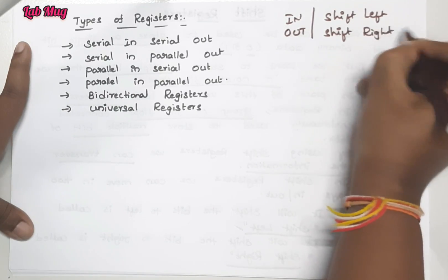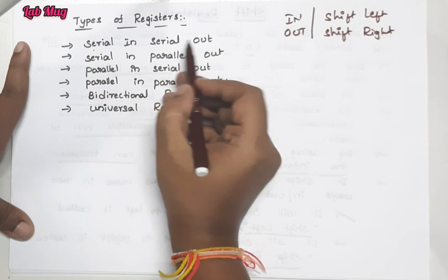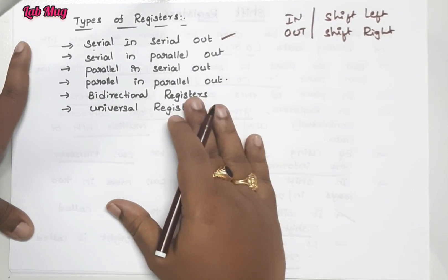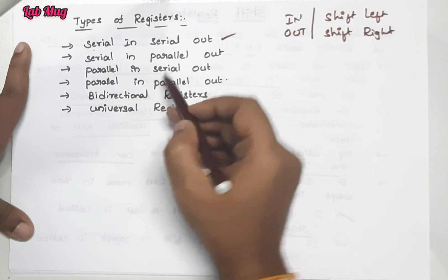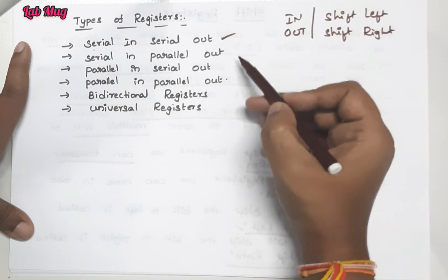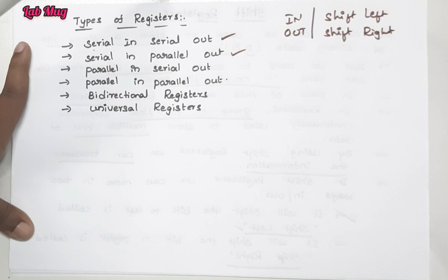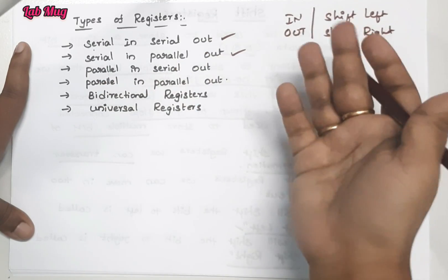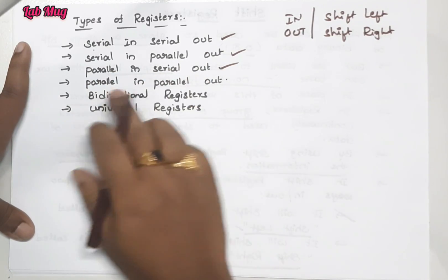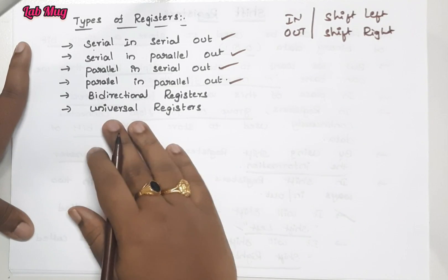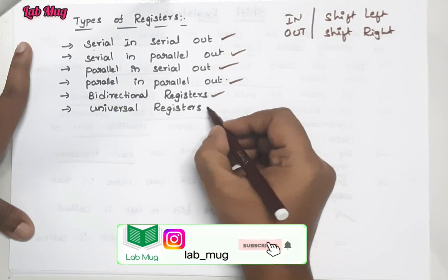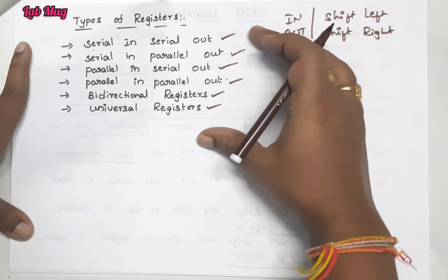Based on these two operations — in and out — we have: Serial In Serial Out (SISO), Serial In Parallel Out (SIPO), Parallel In Serial Out (PISO), and Parallel In Parallel Out (PIPO) registers. There are also bidirectional registers and universal registers.